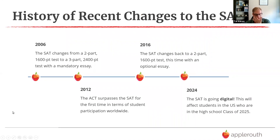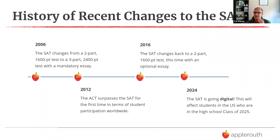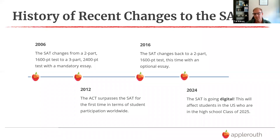Looking at recent and future changes — even since I took it back in 2002, it's changed a lot. At that point it was out of 1600 but very vocab-based, 10 sections, all short. In 2006 it changed to a three-part test with 2,400 points and a mandatory essay. In 2012 the ACT actually passed the SAT, which I think made College Board act and become more like the ACT — changing back to a two-part test, essay optional.